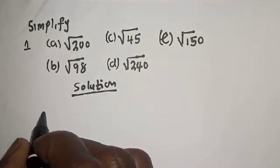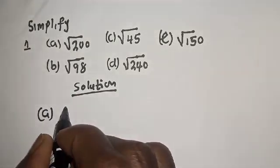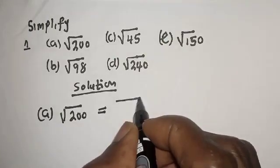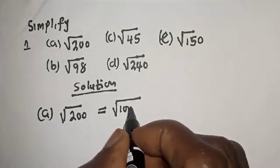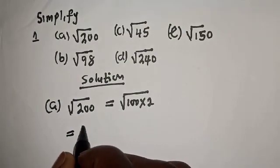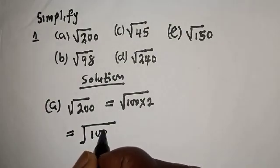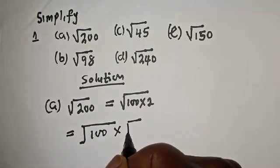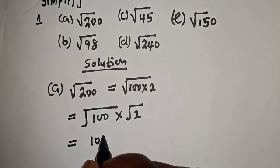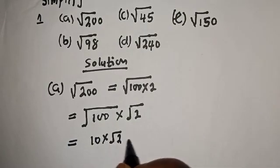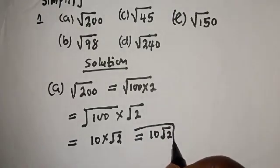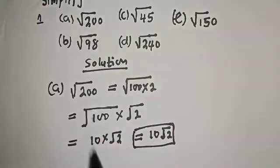Let's consider the first example: (a) square root of 200. Square root of 200 can be written as square root of 100 times 2, which equals square root of 100 multiplied by square root of 2. Square root of 100 is 10, multiplied by square root of 2.